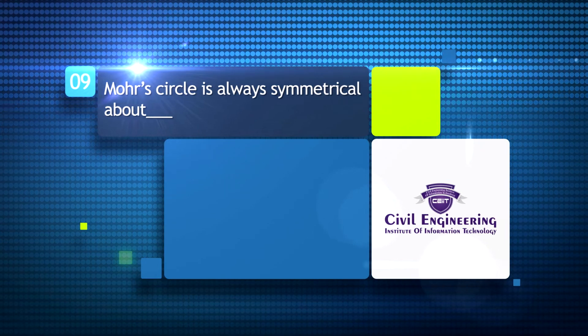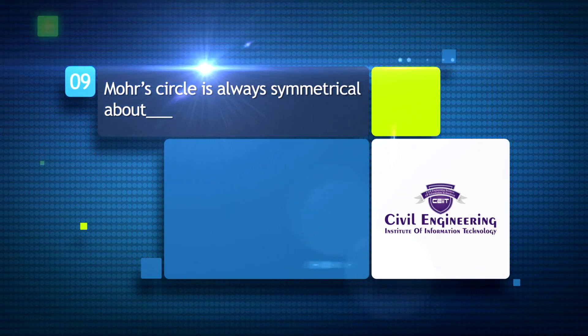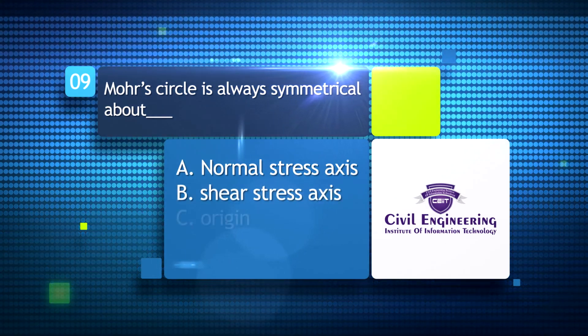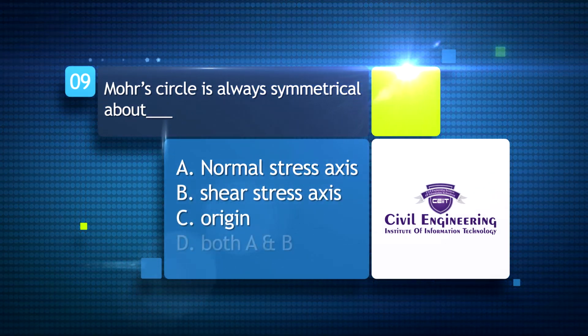Mohr's circle is always symmetrical about: A. normal stress axis, B. shear stress axis, C. origin, D. both A and B.